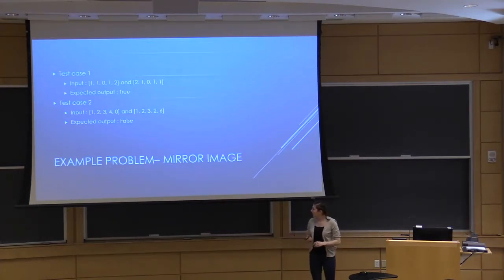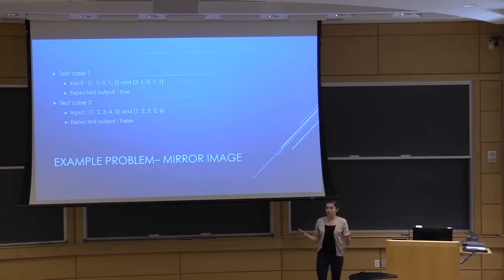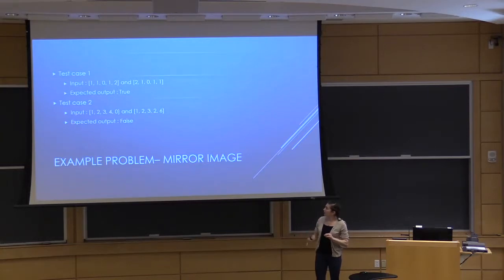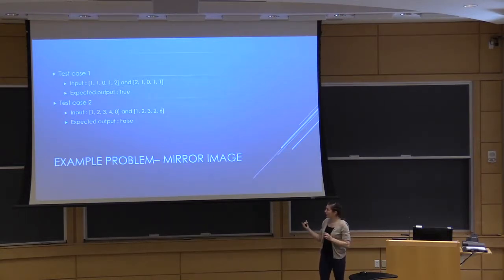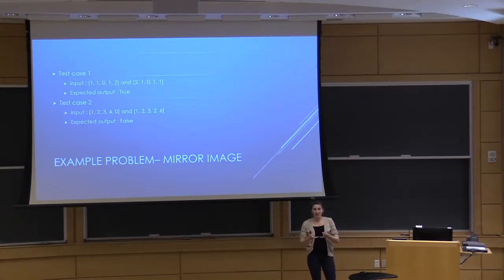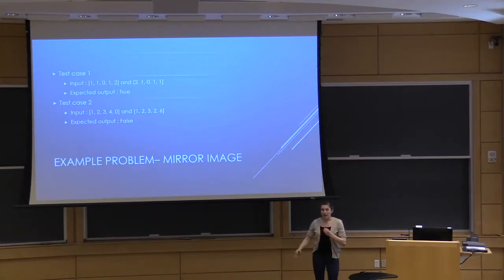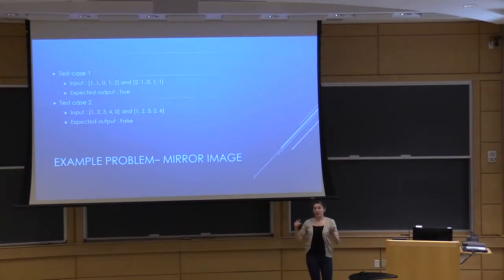One example I'll go into more detail on is mirror image, which was a relatively easy problem. It took in two vectors and determined whether or not they were mirror images of each other. For instance, the first test case has input vectors [1,1,0,1,2] and [2,1,0,1,1] — a mirror image — so the expected output is true. The second test case, [1,2,3,4,0] and [1,2,3,2,6], is not a mirror image, so the expected output is false.